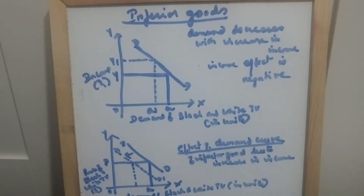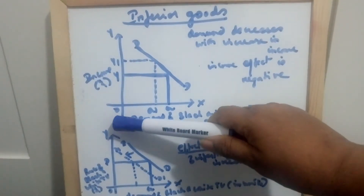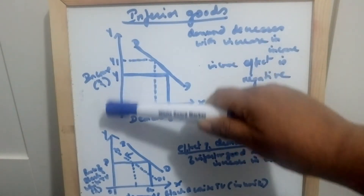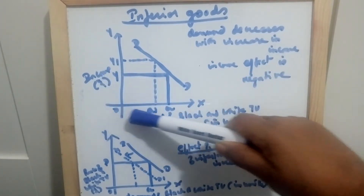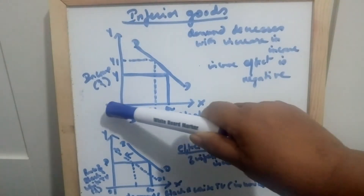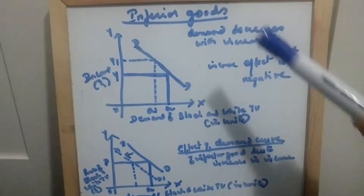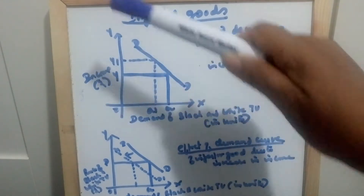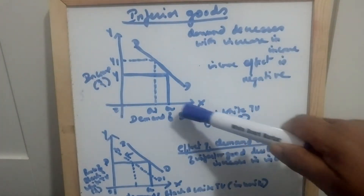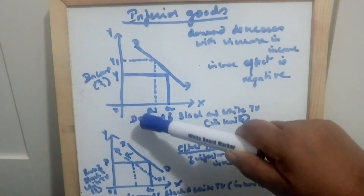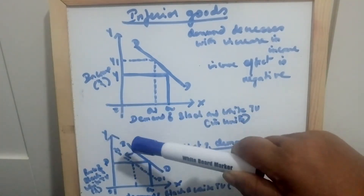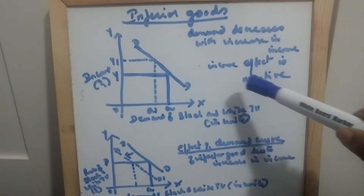What are inferior goods? Inferior goods are goods whose demand decreases with increase in income. Here, at income OY, demand for black and white TV is OQ. Now income increases from OY to OY1, and demand for black and white TV decreases from OQ to OQ1. So here you find the income effect is negative.